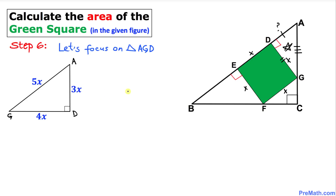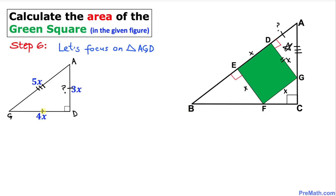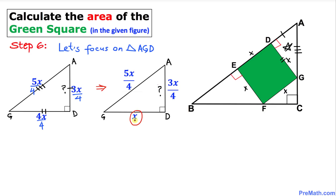Copying down triangle AGD: its sides are in ratio 3:4:5, so we write 3x, 4x, and 5x. We know the side corresponding to 4x is X units. Dividing everything by 4, this side turns out to be X units, and the side AD turns out to be 3x/4.